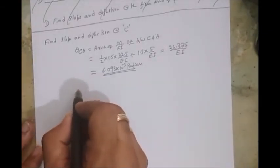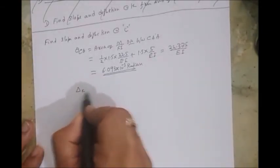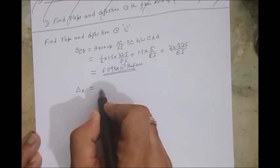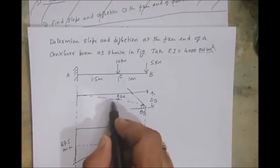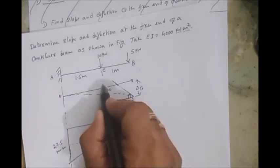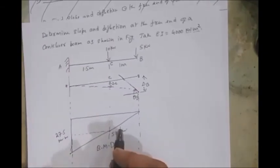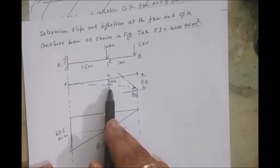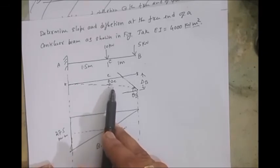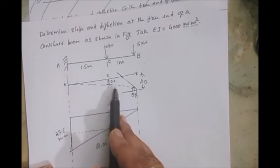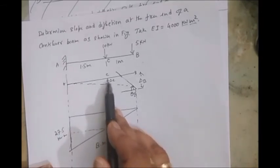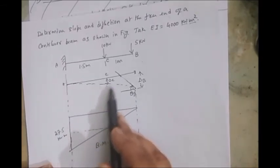Similarly, suppose if I want delta C, so what I need to do is delta C. I'll go to elastic curve, so this is what delta C I'm looking at. This is A point and this is B point. Delta C is moment of a Mohr diagram between C and A about C.